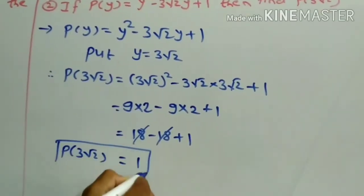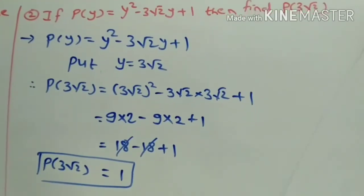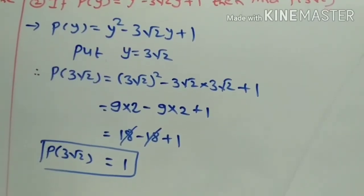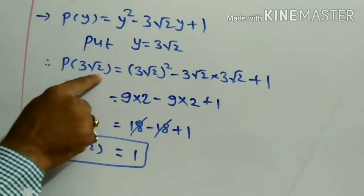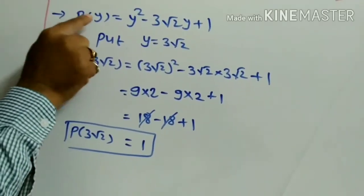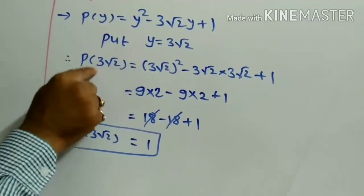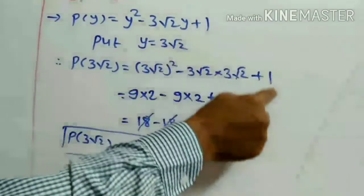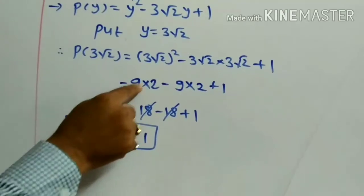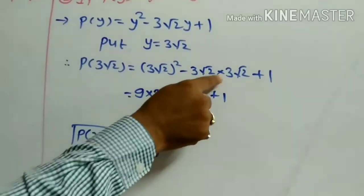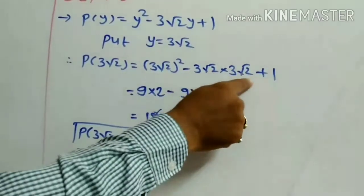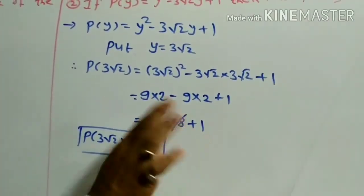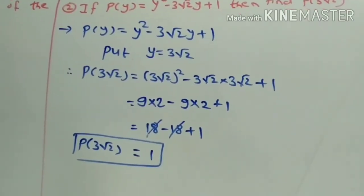18 minus 18 gets cancelled. The remaining value is 1. Therefore, p(3 root 2) is equal to 1. To summarize: given p(y) = y squared minus 3 root 2 y plus 1, put y equal to 3 root 2. Then (3 root 2) squared gives 9 times 2 equals 18, minus 3 times 3 root 2 times root 2 gives 9 times 2 equals 18 plus 1. 18 minus 18 cancels, leaving 1. That is the value of p(3 root 2).